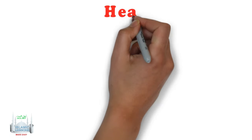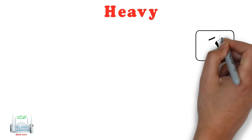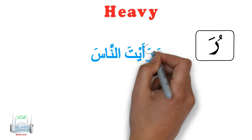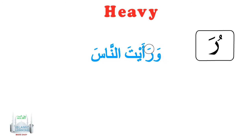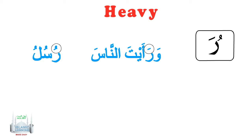If the Ra has a Fathah or a Dhamma on it, it is pronounced heavy. For example, the Ra has a Fathah — it is heavy. It reads وَرَأَيْتَ النَّاسَ, not وَرَه but with a heavy sound. Another example: the Ra has a Dhamma. It reads رُسُل with a heavy Ra.